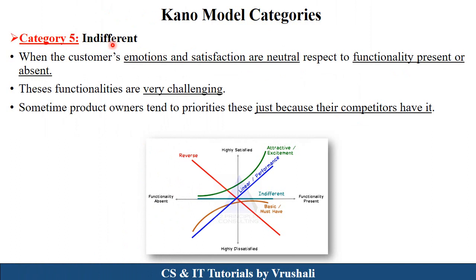The next category is indifferent, which means a neutral state. Whether the functionality is absent or present, the customer's emotions and satisfaction are neutral. This is a good-to-have functionality — just because competitors have it. For example, PhonePe has a wallet feature but Google Pay doesn't. Whether this functionality is present or absent, the customer remains satisfied. This is called indifferent or neutral functionality.